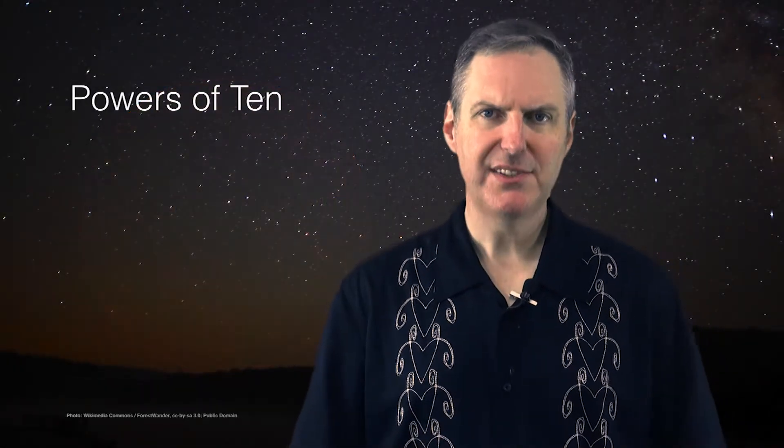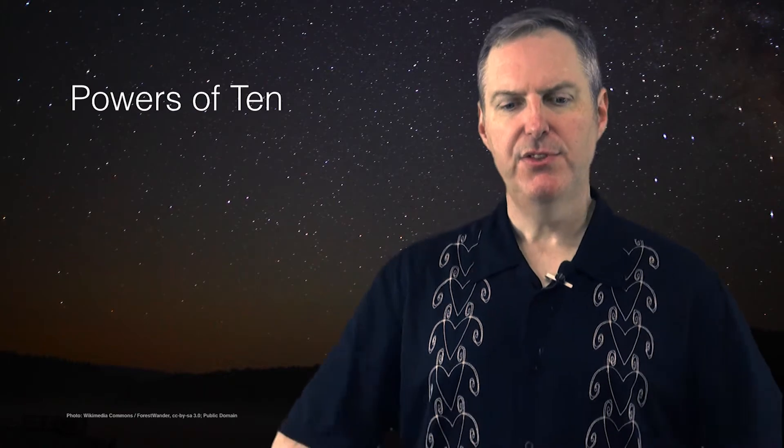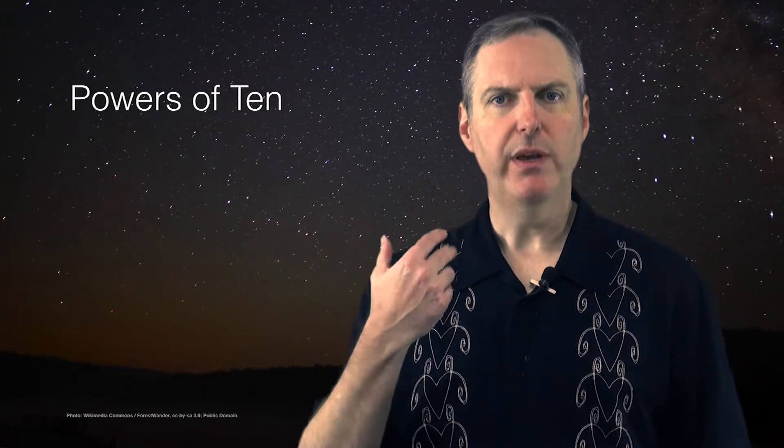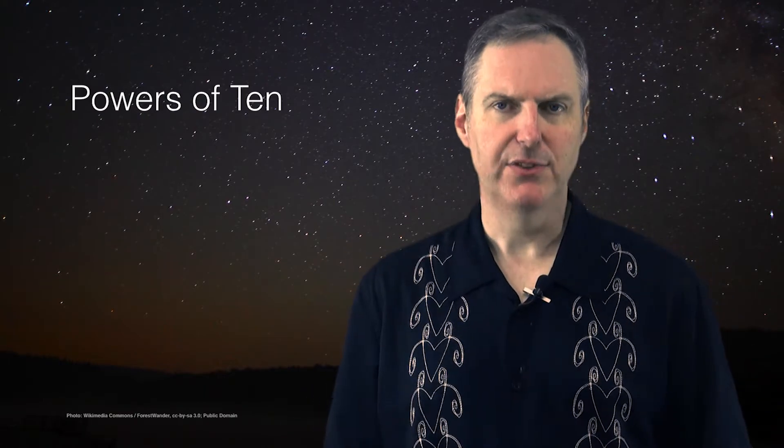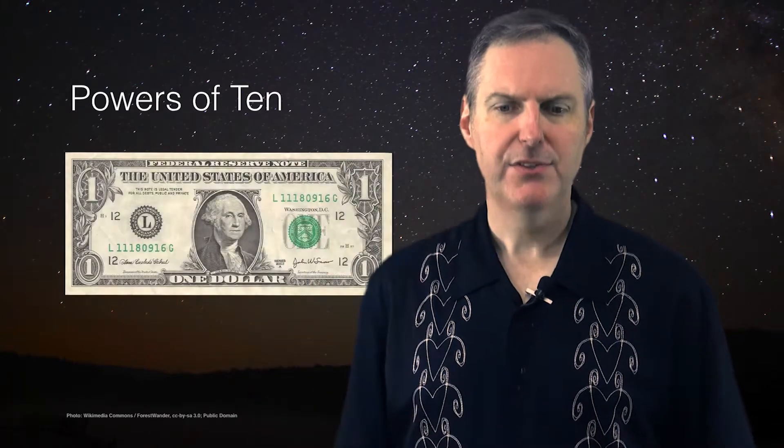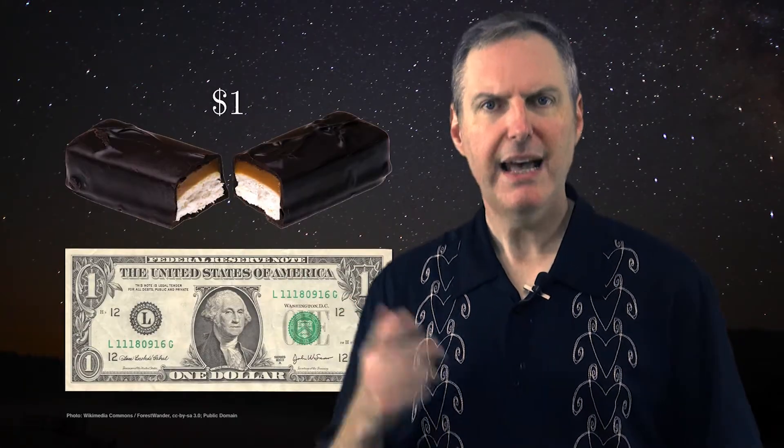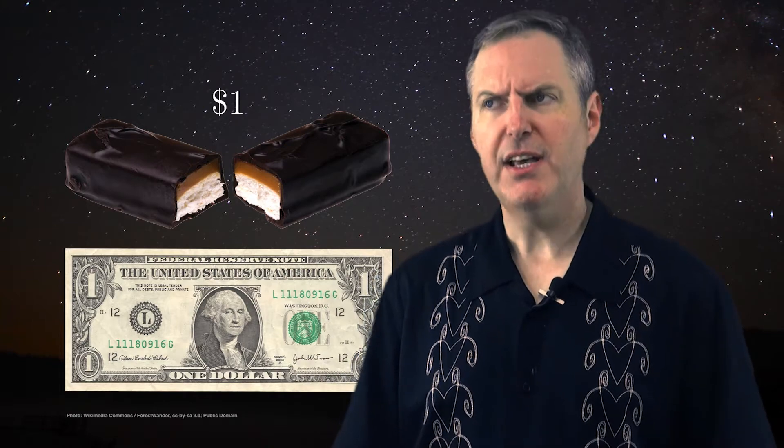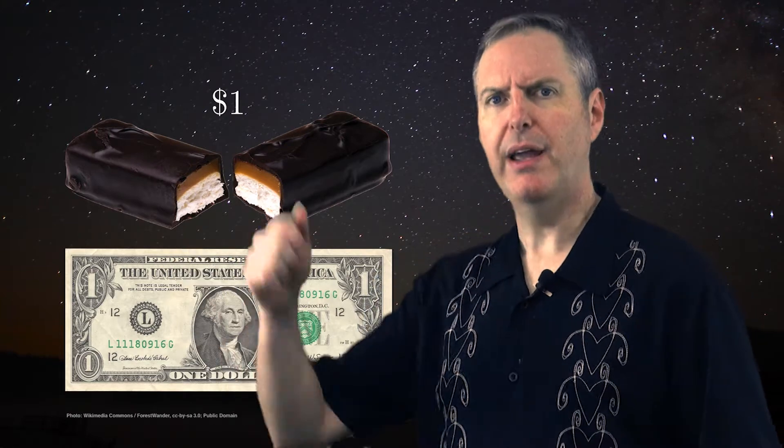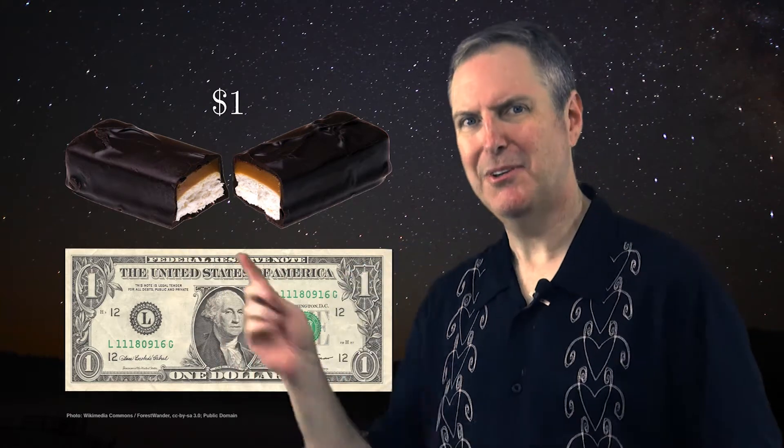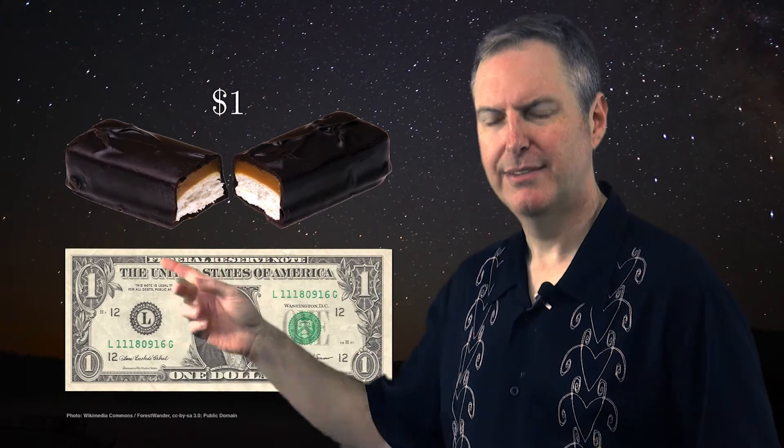A good way to visualize these powers of ten is to put it in terms of something that we can all understand and relate to. I'm talking about money. So for example, one dollar, that'll buy you a candy bar. Say a nice Milky Way candy bar. Milky Way. See what I did there?